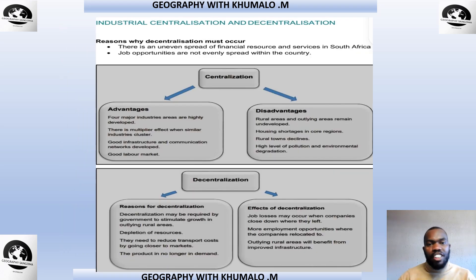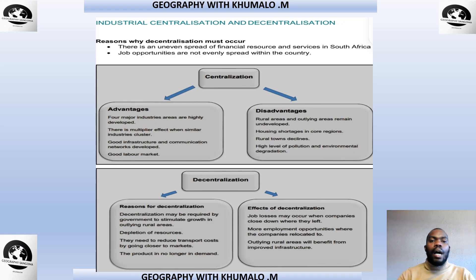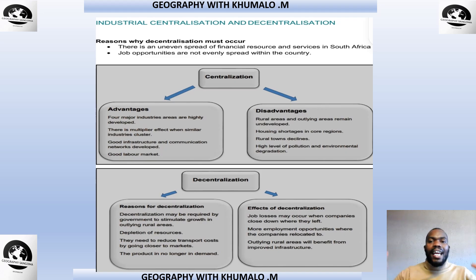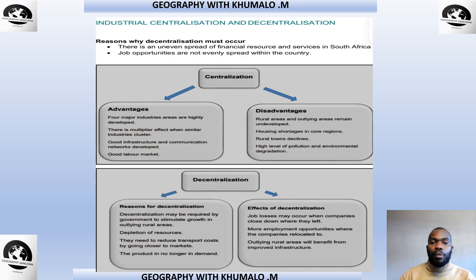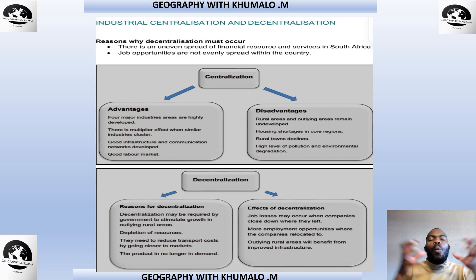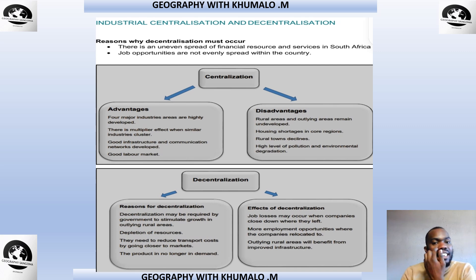Now let's look at the concept of centralization and decentralization in industry. Industrial centralization is when most industries are found concentrated in one place — over-concentration. We then need to remove industries and take them to outlying areas. Reasons for decentralization include: an uneven spread of financial resources and services in South Africa, where government resources go mainly to areas with economic potential, and job opportunities are not evenly spread throughout the country.